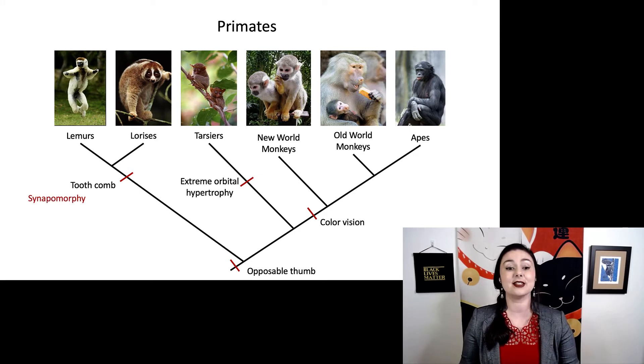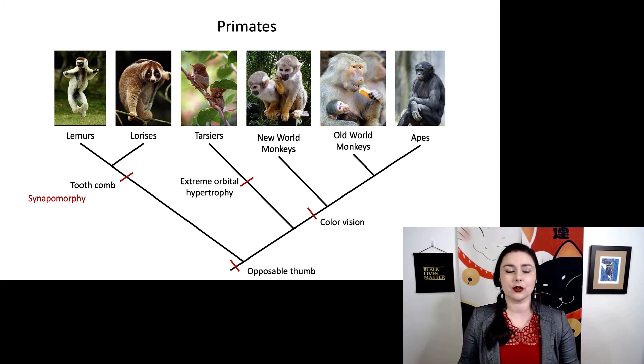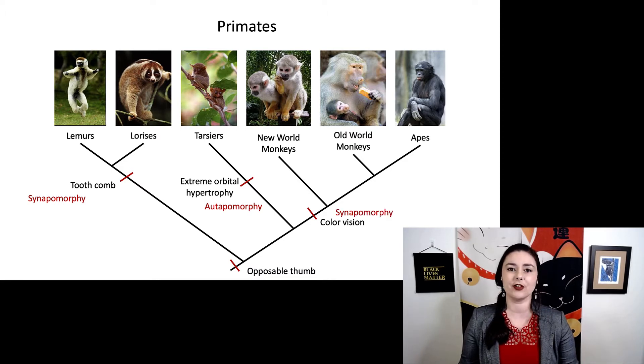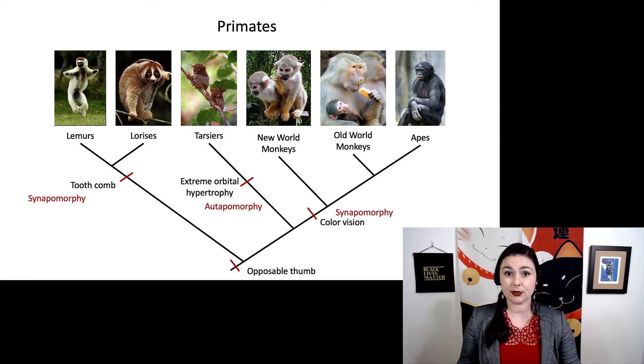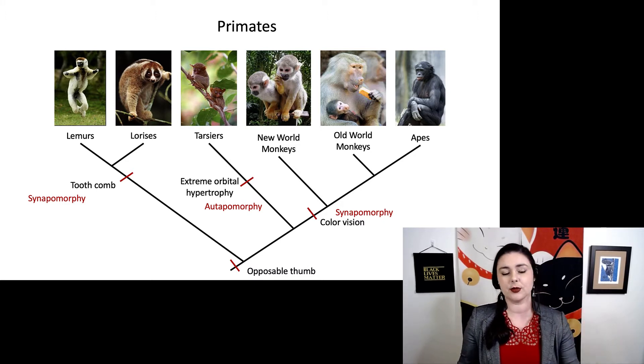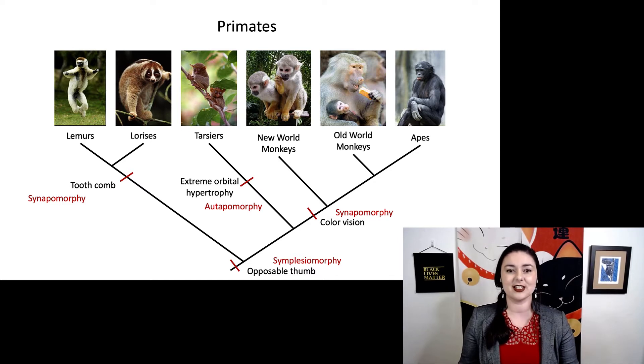Our tooth comb here, that is a synapomorphy between lemurs and lorises because it is shared between two different groups here. Extreme orbital hypertrophy, that is an autapomorphy of tarsiers because they are the only ones that have it. Color vision in anthropoids, that is a synapomorphy because again, it is shared. Remember, I am oversimplifying color vision in anthropoids, but let's just go with it for now. Our opposable thumb, you notice that's all the way at the base of the tree because all primates have this opposable thumb. And that is a symplesiomorphy. It is a shared ancestral trait. A good cheat is if a character appears at the base or the root of your tree, that is a symplesiomorphy.